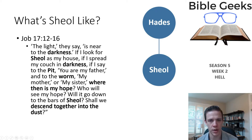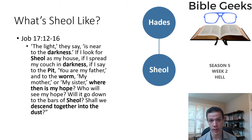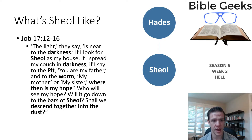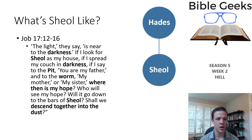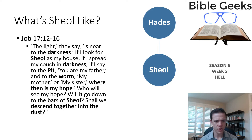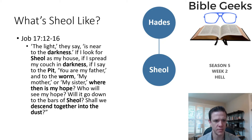So what do we know about Sheol? What can we glean from the text? I think this passage from Job is a really great summary. From Job chapter 17: 'The light, they say, is near to the darkness. If I look for Sheol as my house, if I spread my couch in darkness, if I say to the pit, you are my father, and to the worm, my mother or my sister, where then is my hope? Who will see my hope? Will it go down to the bars of Sheol, or shall we descend together into the dust?' We get a lot of things here that are descriptive of what the author associates with Sheol.